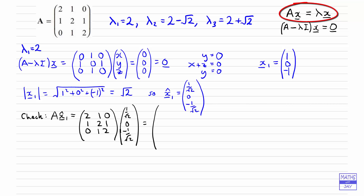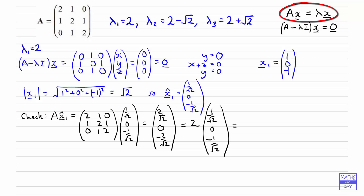It's fairly straightforward because there are so many zeros. Multiplying the first row of the matrix by the eigenvector gives 2 over root 2. Then we get 0 when we multiply 1 by 1 over root 2, 2 by nothing, and 1 by minus 1 over root 2. Multiplying the last row gives minus 2 over root 2. Remember we're trying to show that A times the eigenvector equals lambda times the eigenvector, and our lambda is 2. Taking 2 outside the bracket gives us 2 times 1 over root 2, 0, minus 1 over root 2, which equals 2 times x̂₁, or lambda₁ times x̂₁. So we've confirmed it.